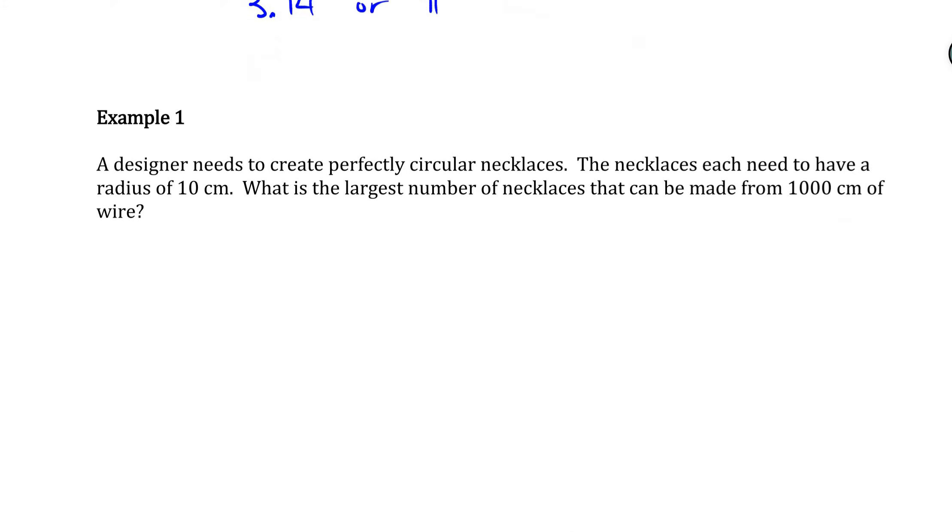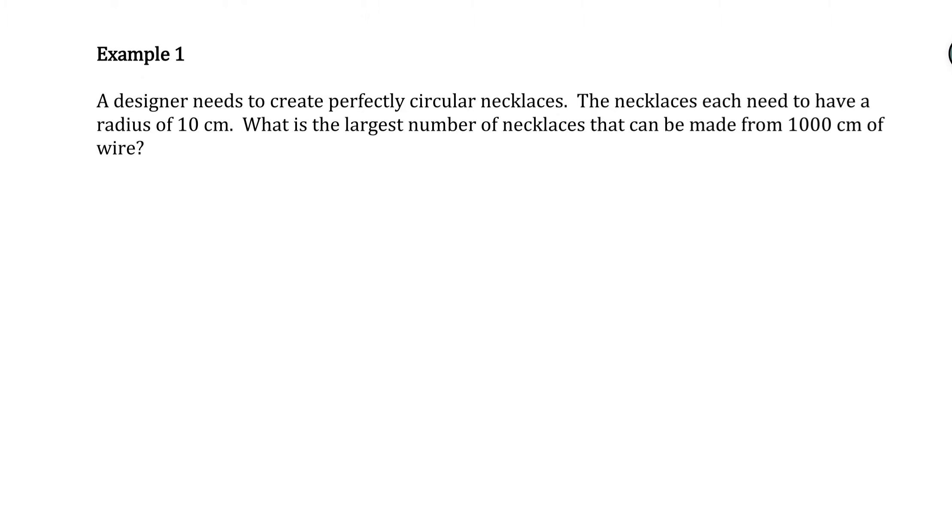Example 1 says, a designer needs to create a perfectly circular necklace. The necklaces each have to have a radius of 10 centimeters. What is the largest number of necklaces that can be made from 1,000 centimeters of wire? So the first thing we have to do is figure out, how many centimeters of wire is required to make one necklace? And then we can figure out how many necklaces we can make with 1,000 centimeters of wire. So one thing we definitely want to check for is units. We see both are the same units, so we don't have to do any conversions.